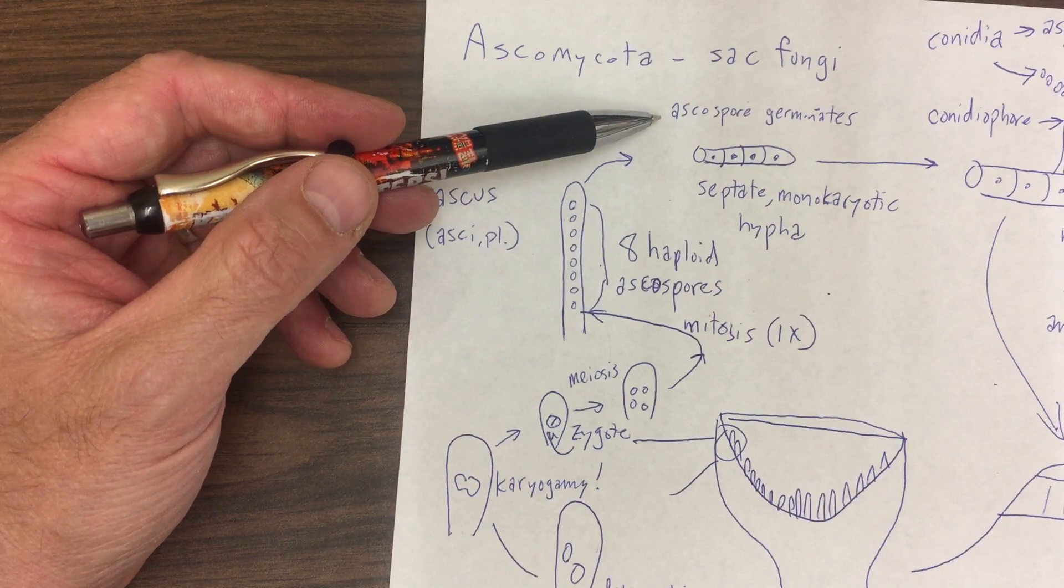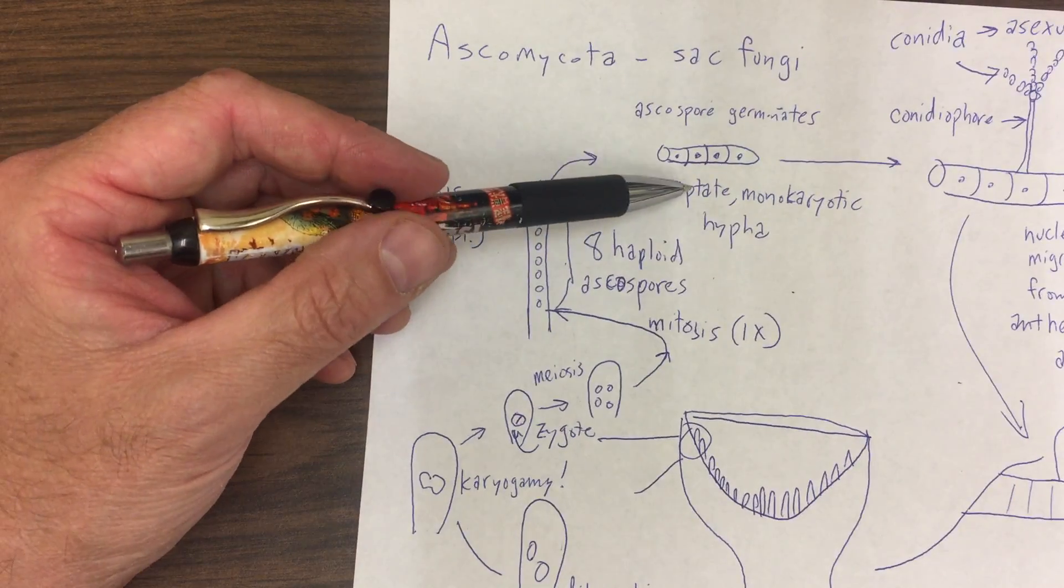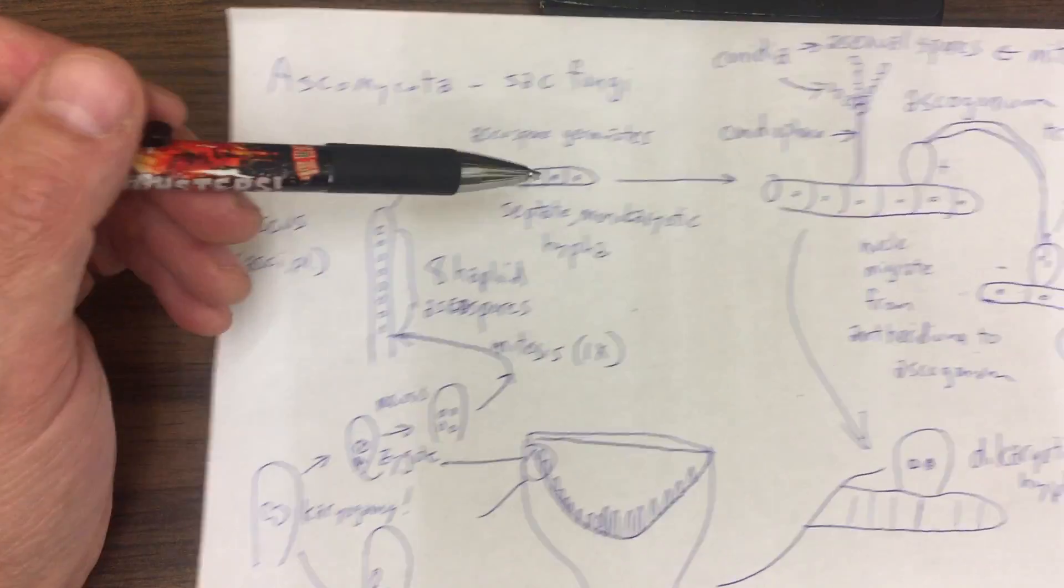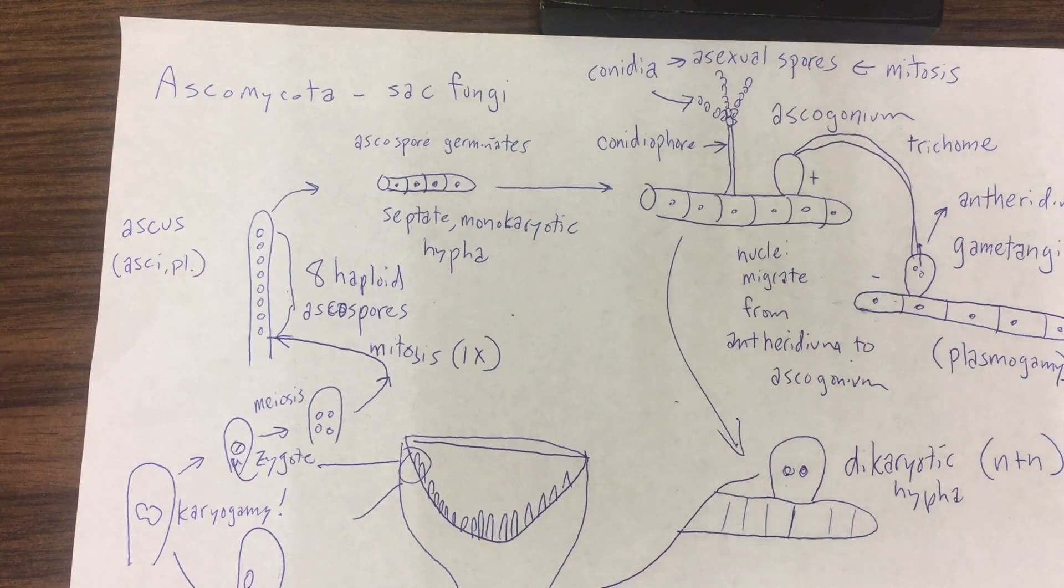And we end up back at the start again, where our ascospores may germinate to form a septate monokaryotic hypha, and so on and so forth, to get us back to the beginning of our life cycle.